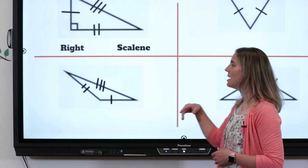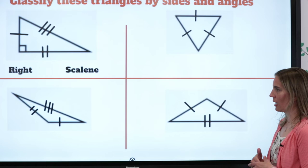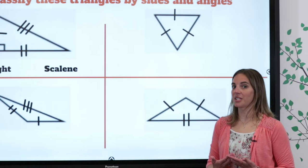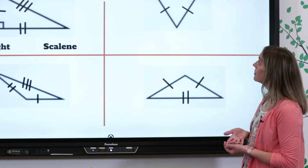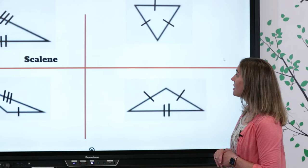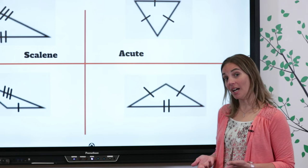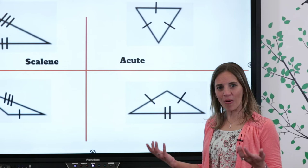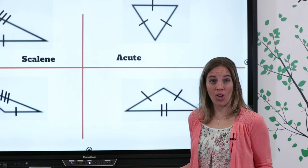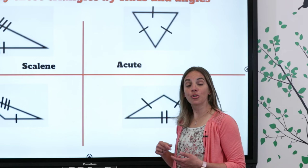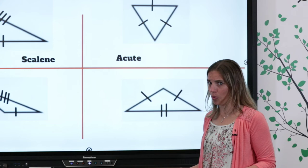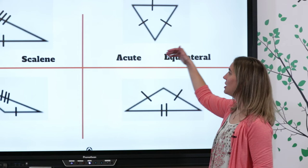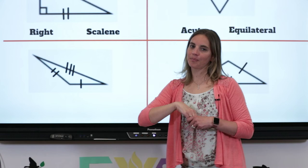Take a look at this next triangle. Let's talk angles first — all of the angles are acute, which means this is an acute triangle. Now what do you notice about the sides? Those three tick marks tell you that all of the sides are the same. What kind of triangle has all sides equal? Equilateral. So this is an acute equilateral triangle.